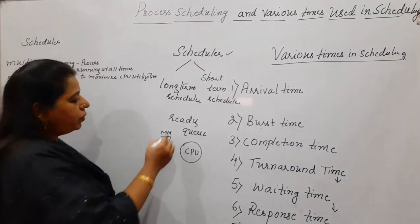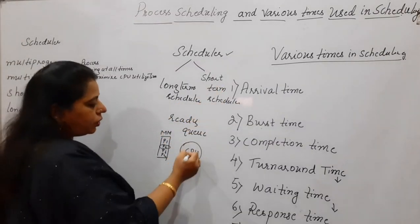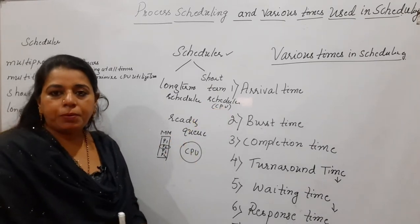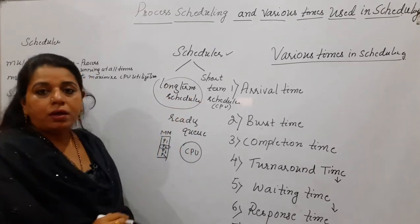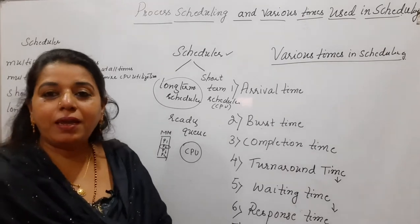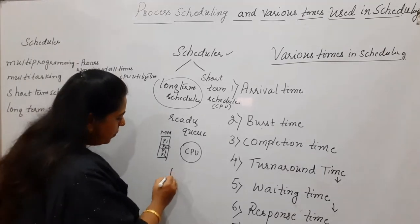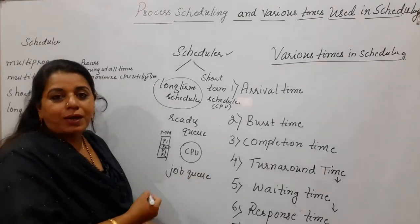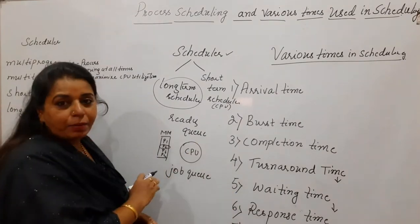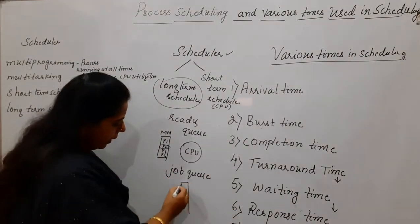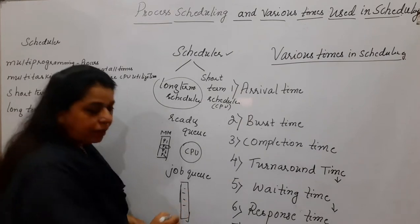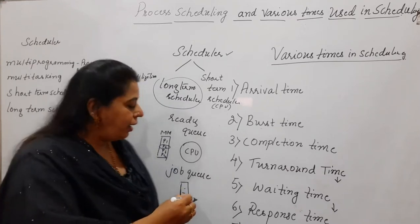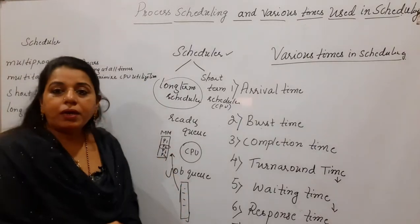This is normally called the short-term scheduler or the CPU scheduler — that is the job of the short-term scheduler. The long-term scheduler picks the process from the job queue. In the system you have secondary memory and main memory. Normally all programs reside in secondary memory initially, and only at the time of execution are they brought from secondary memory and put into main memory.